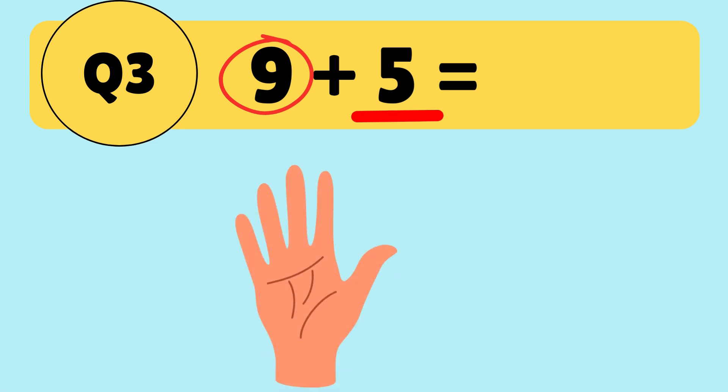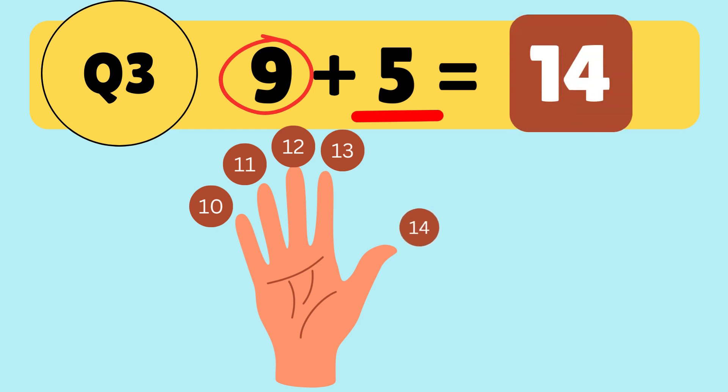Hold up 5 fingers and let's count together starting from 9. 9, 10, 11, 12, 13, 14. That's it! 5 plus 9 is equal to 14. Well done!